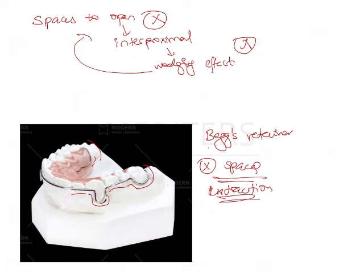Other types of questions that may be asked from this topic include identifying the various retainers. For example, they may give you an image of a Begg's retainer, a spring clip retainer, or an SX retainer. Go through these images carefully because they can be asked as image-based questions.